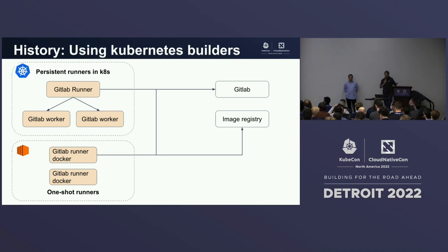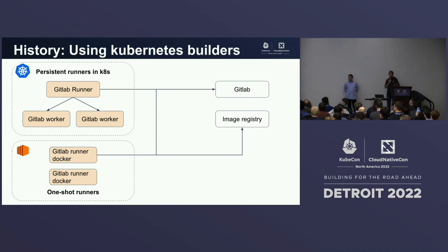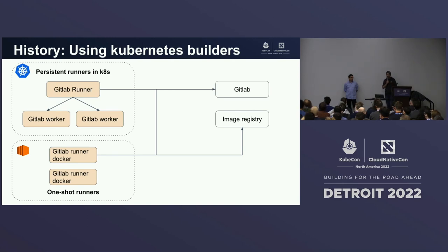That was working fine until the company had grown a bit, and we were having many more engineers, many more builds every day, and Docker machine was starting to hit limits. We were hitting API rate limits with the AWS API, and it was starting to be tricky to scale with the scale of the company. So we migrated our workers to Kubernetes — this was easy because at that time we had enough knowledge of Kubernetes at Datadog to be able to do that, and it was pretty successful. But to build Docker images, we were still using the dedicated runners.